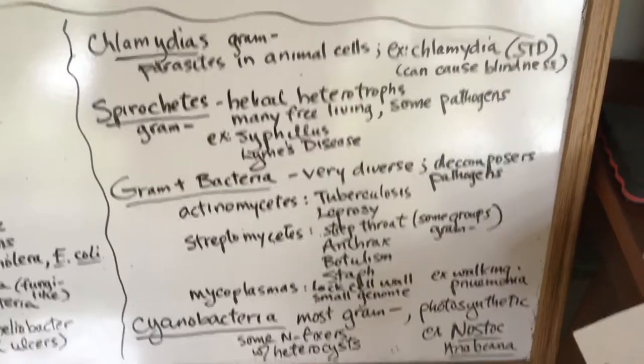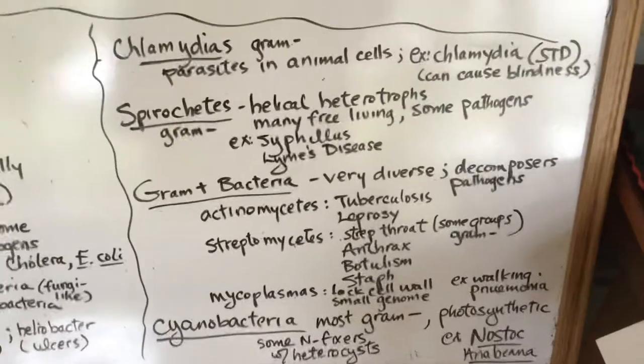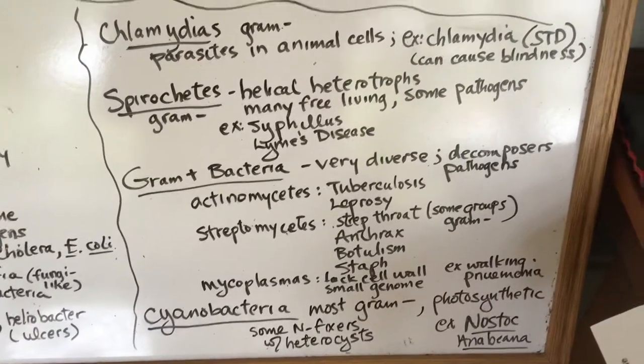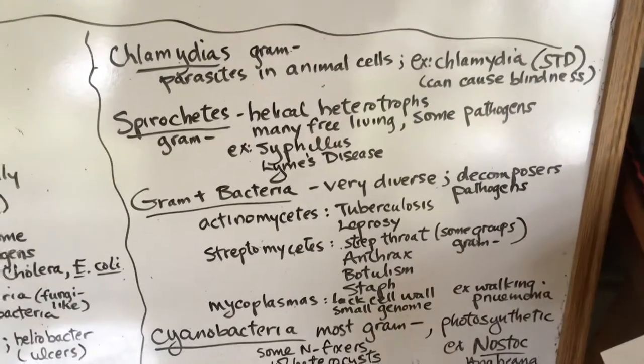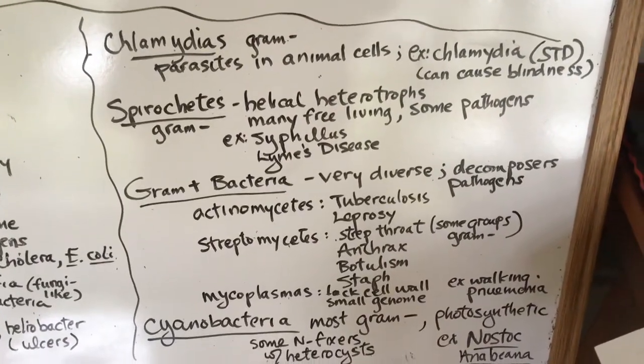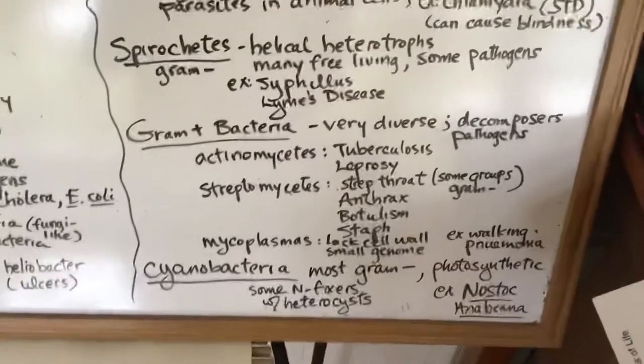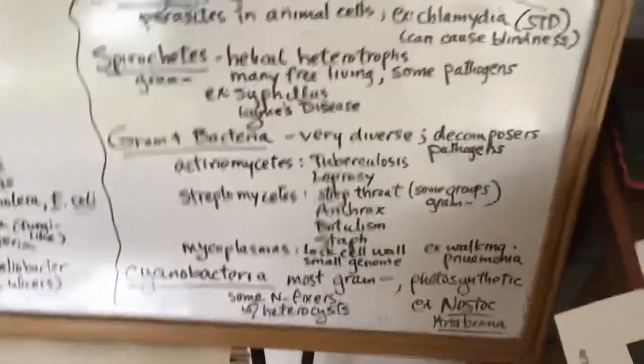Spirochetes are like spirillus, that's their main shape. They're helical. Many are free living, some are pathogens. A couple of famous ones are Syphilis and Lyme disease.